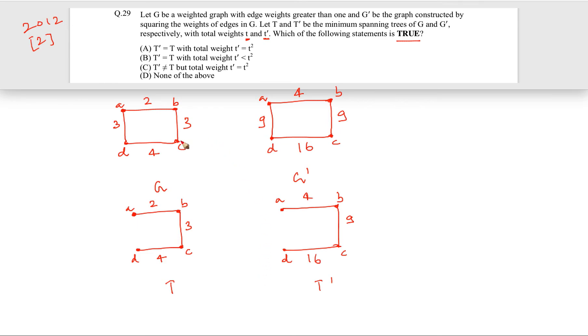Why? Because we have chosen such an example where there is a possibility that initially T could have been something like BA, AD and DC, this one. Or T prime I can choose to be something different, something like this. This is also a minimum spanning tree.